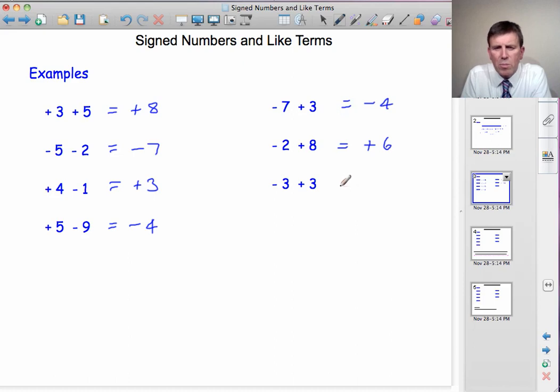And finally, minus 3 plus 3. We haven't got more positives, we haven't got more negatives. They cancel each other out. Minus 3 plus 3 gets you to 0.